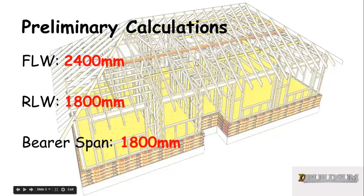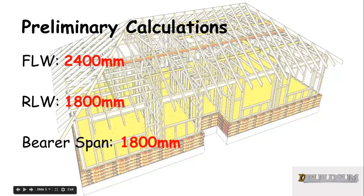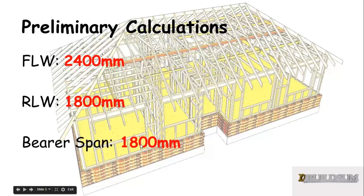We have to do some preliminary calculations before we can start working out our bearers, so you need to know your floor load width. In this case I've worked out 2,400 — if you need to be refreshed on how to work out floor load width, just go back to my video on that and I'll put a link in the description. Remembering we have a roof load width for this job of 1,800 — again I'll put a link in the description back to the video on that. I'm going to assume a span of 1,800 between my piers or my subfloor supports and we'll use that to start our calculations.